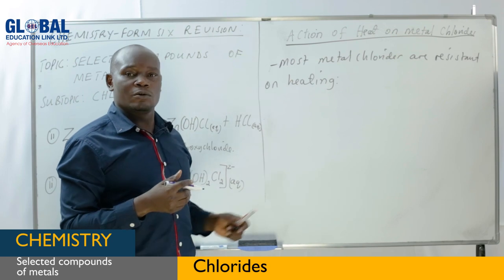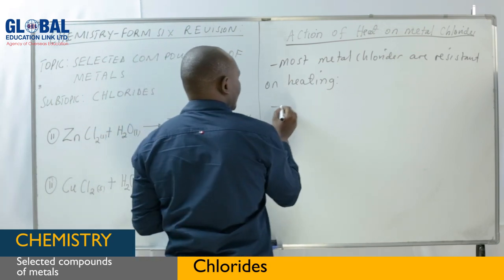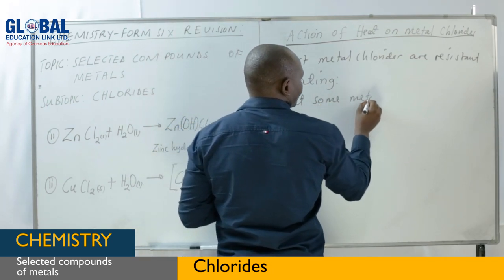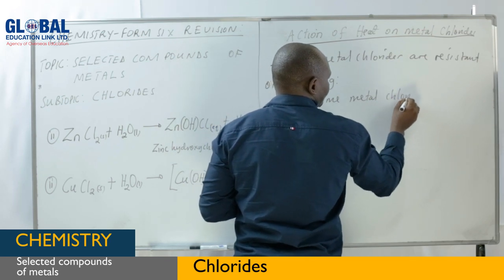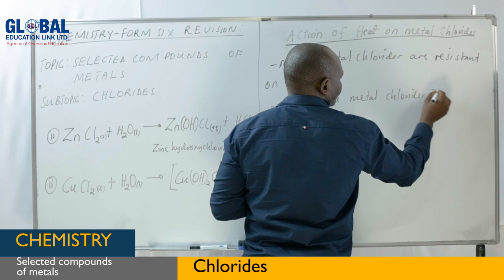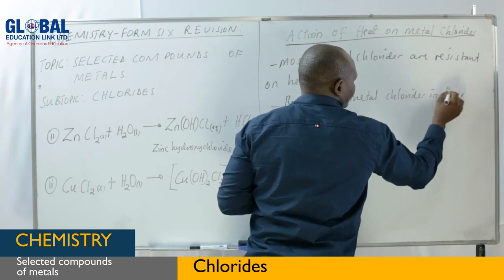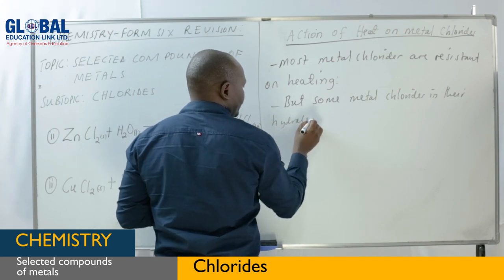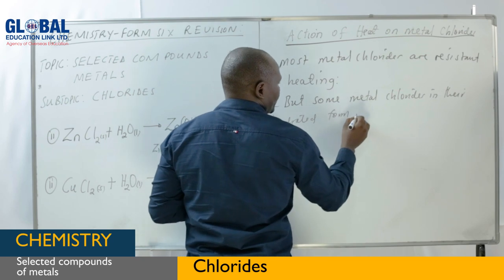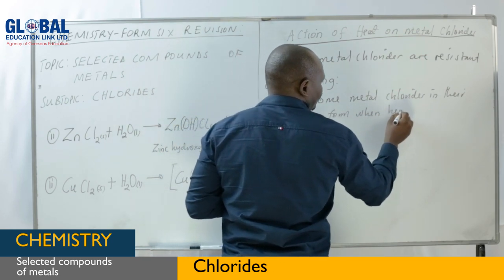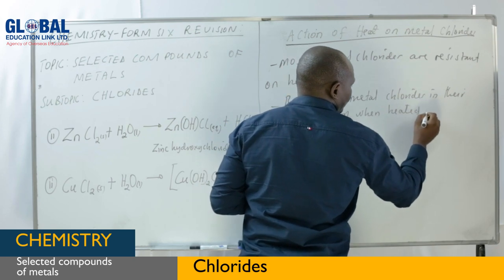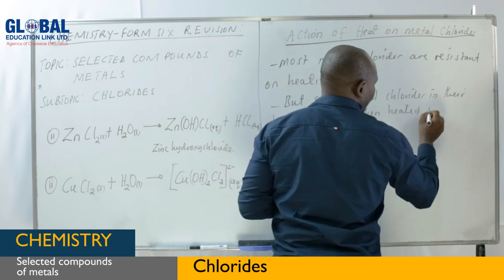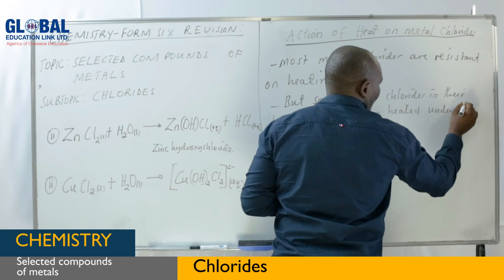Some metal chlorides in their hydrated form, when heated, get decomposed by the reaction which we call hydrolysis. Let us take an example of our hydrated metal chloride, which is magnesium chloride with six water molecules — so it is hexahydrated magnesium chloride.